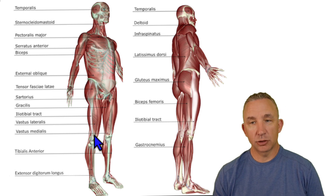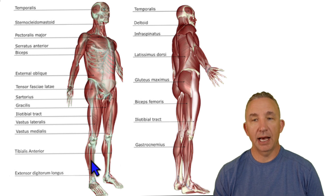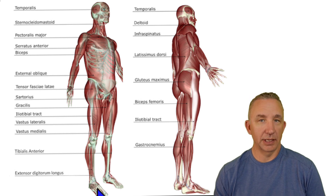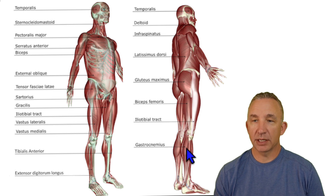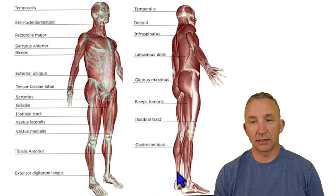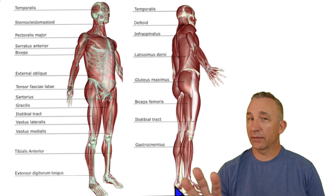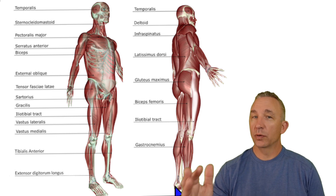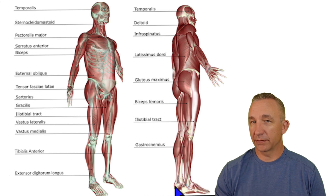Coming down to some of my extensors — along the side of the tibia I have tibialis anterior. Coming down to the digits, extensor digitorum longus, and there would also be extensor hallucis longus. Major calf muscles: gastrocnemius, and deep to that soleus. Gastrocnemius comes down to what we call the calcaneal tendon, which is the Achilles heel. This is just a quick review of superficial muscles on the anterior and posterior side — we'll get into future videos to break down different areas of the body.